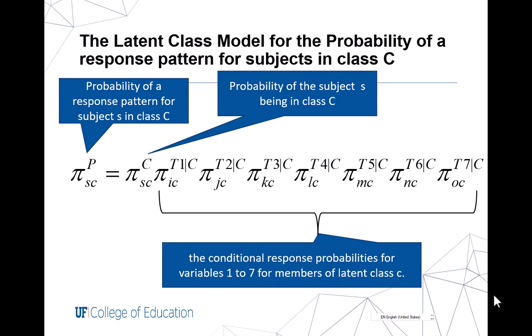subject being in class C, which is like a class prevalence probability, and the conditional response probabilities for the indicators. In this case,